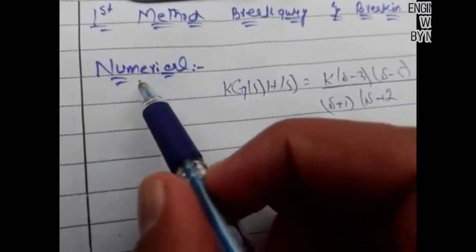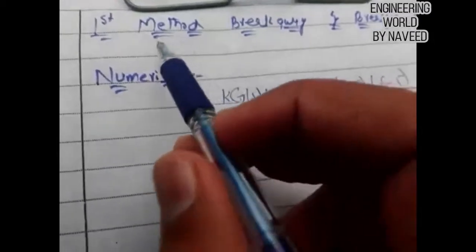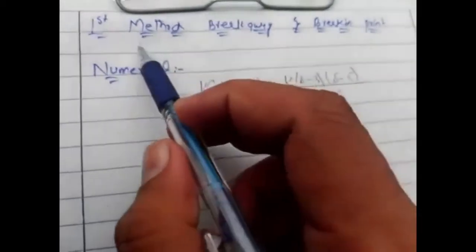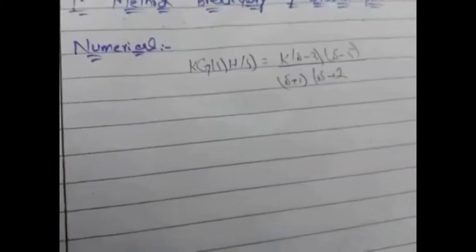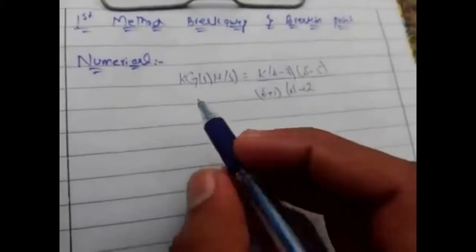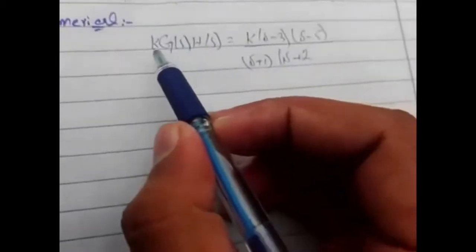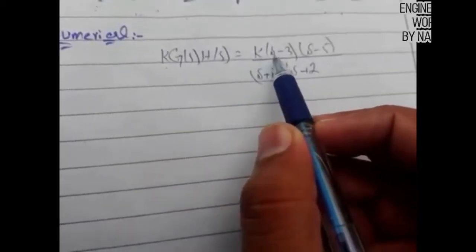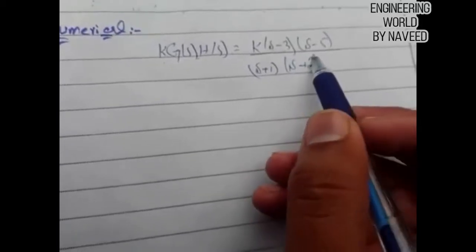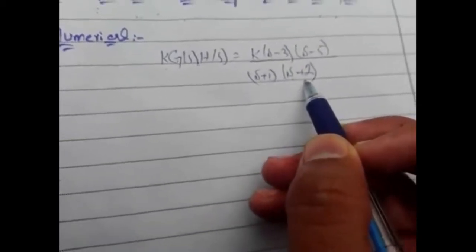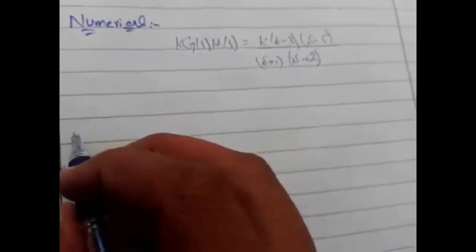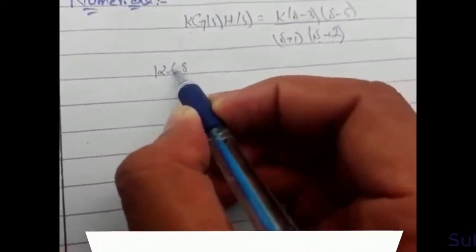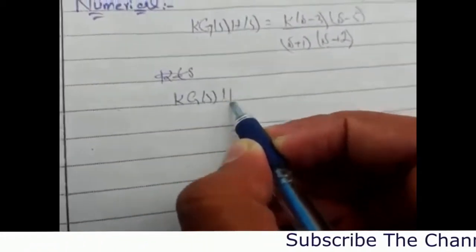Today we discuss the numericals relating to the first method of breakaway and break-in point. I already discussed this method in my previous video. The numerical given is that the open loop K·G(s)·H(s) is equal to K times (s minus 3)(s minus 5) divided by (s minus 1)(s plus 1)(s plus 2). We need to find the breakaway and break-in points.